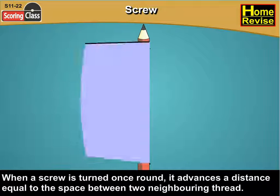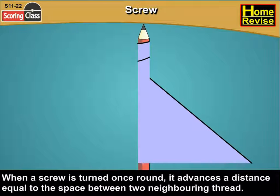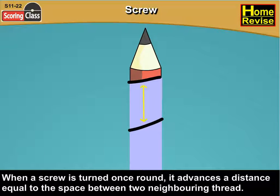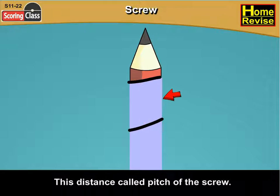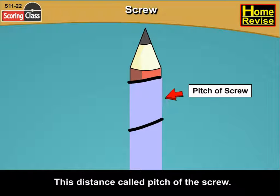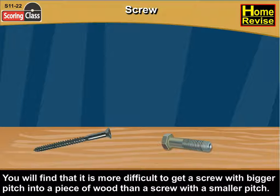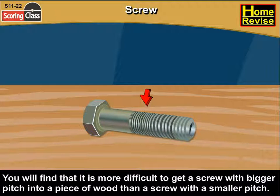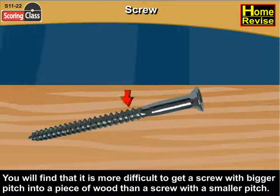When a screw is turned once round, it advances a distance equal to the space between two neighboring threads. This distance is called the pitch of the screw. You will find that it is more difficult to get a screw with bigger pitch into a piece of wood than a screw with a smaller pitch.